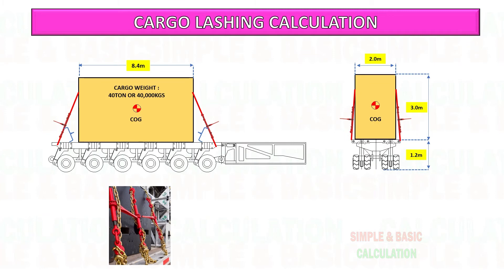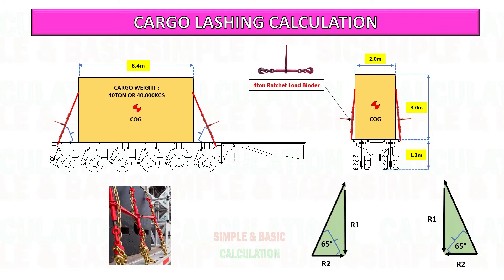We will use four pieces of ratchet load binder to secure the cargo on the trailer bed. Each piece has a capacity of four tons, and the lashing degree is 65 degrees.